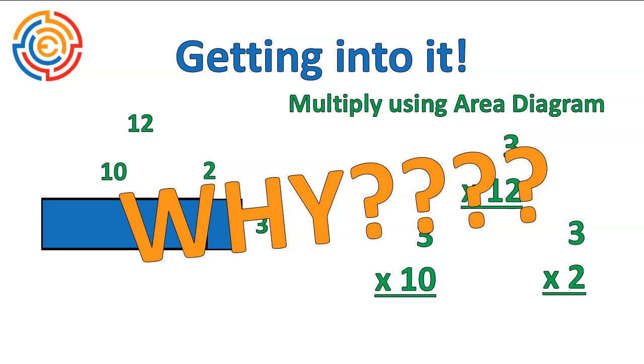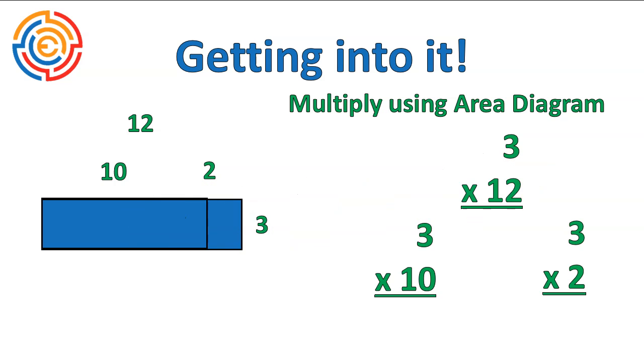And the reason is that it's easier to do the smaller multiplication questions in your head. So for mental math purposes, it might actually be easier to recognize that 3 times 12 is 3 times 10 plus 3 times 2.